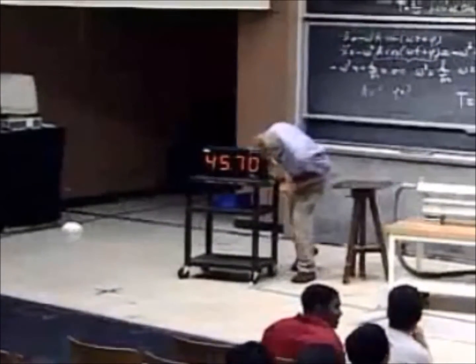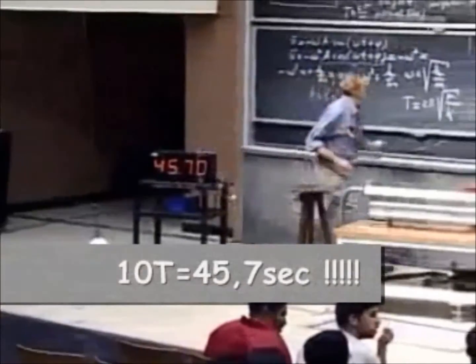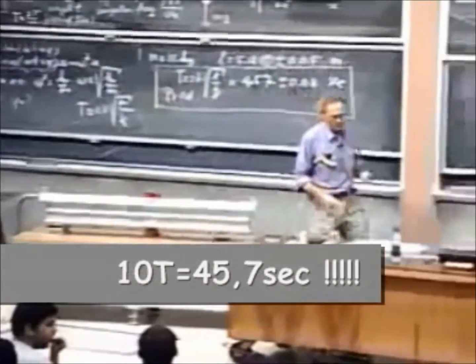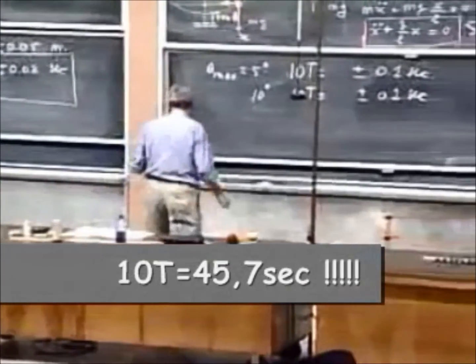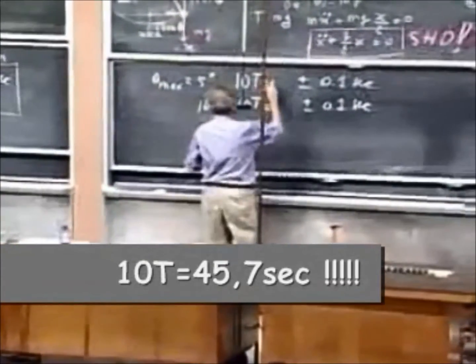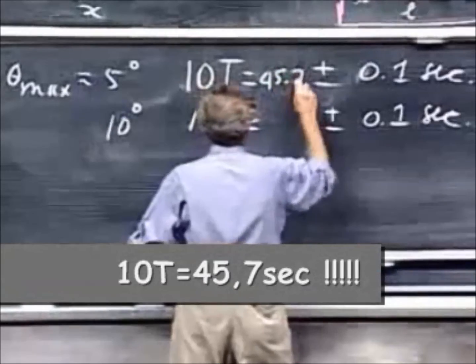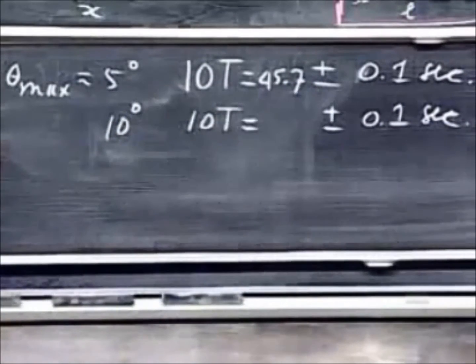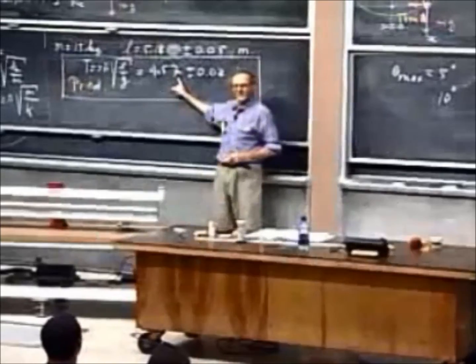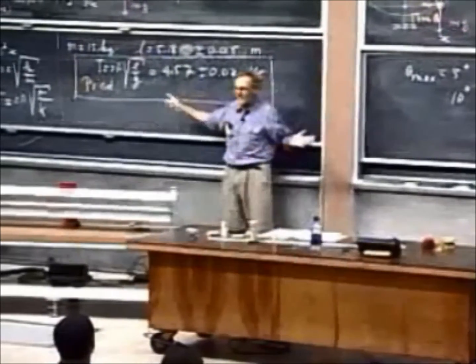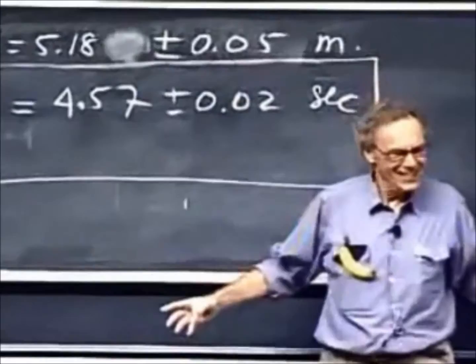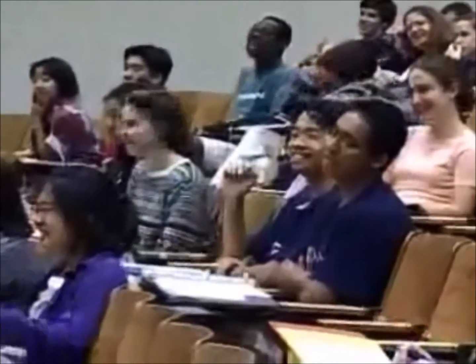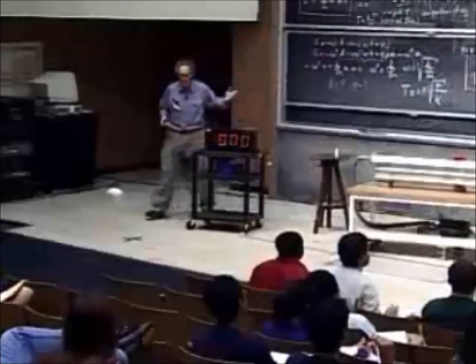45.70. Where's my chalk? 45.70. What was my prediction? You get the picture. That is pure luck, because my accuracy is no better than a tenth of a second.